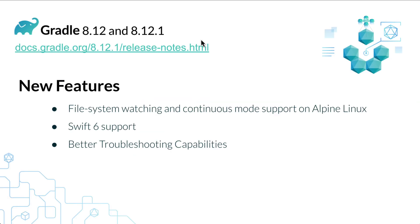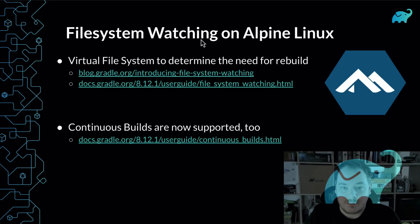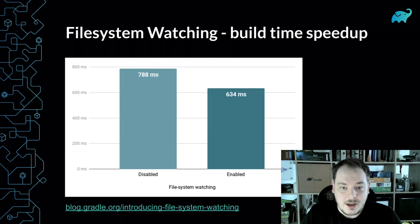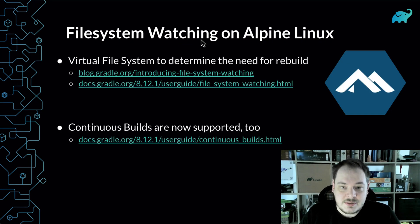Let's talk about the new features introduced in 8.12. There are quite a lot of platform-specific changes, and the first one is support for file system watching on Alpine Linux. It's basically a virtual file system implementation so that Gradle doesn't have to do file system calls and instead can check with an in-memory cache. This improves performance quite a lot, especially for projects that involve a lot of files. This feature also enables continuous builds on this platform.